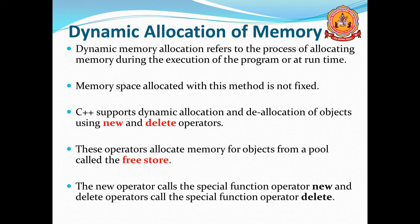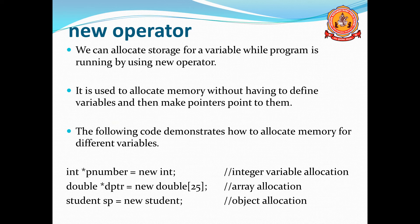The new operator calls the special function operator new, and the delete operator calls the special function operator delete. We can allocate storage for a variable while the program is running by using the new operator. When you are going to execute the program, at that time memory space is allocated by using the new operator. It is used to allocate memory without having to define a variable first — directly we can allocate the memory space.